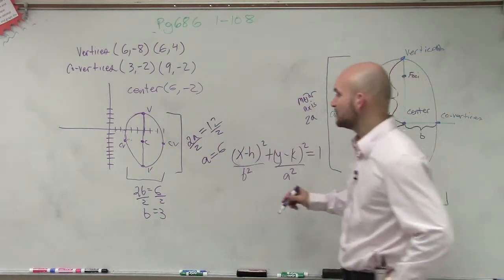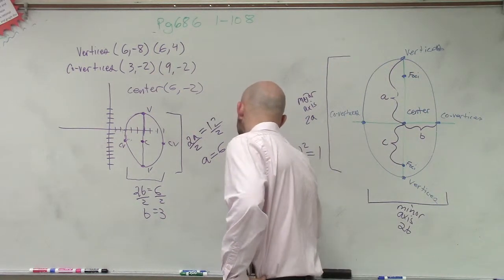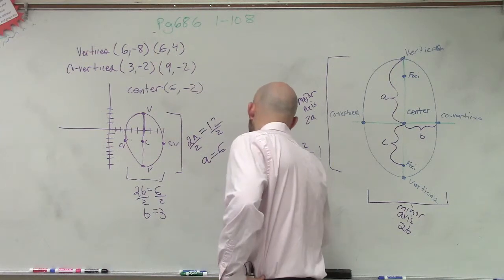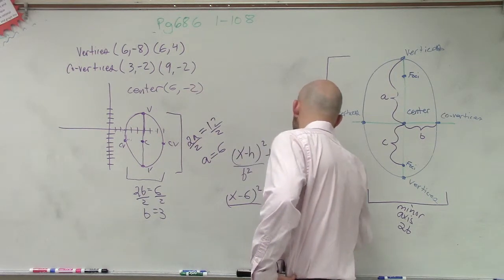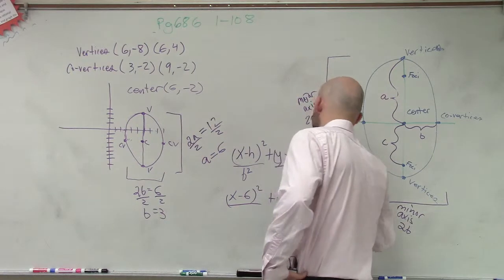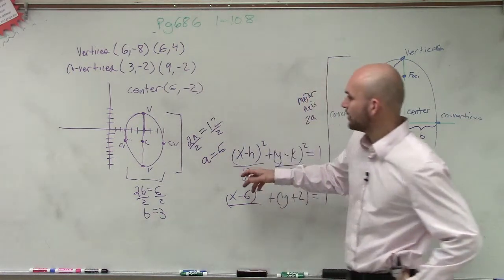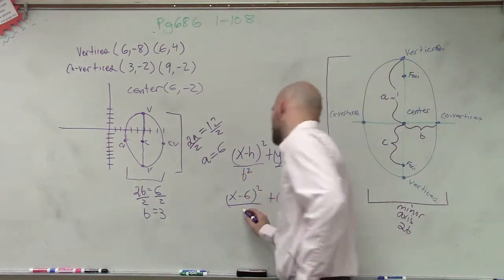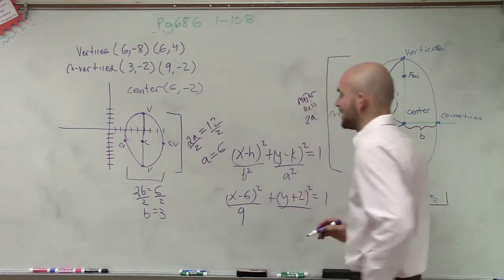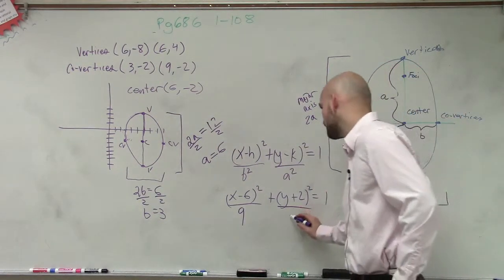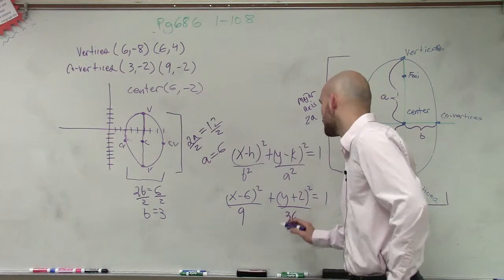So therefore, opposite of, so it's going to be (x minus 6)² plus (y plus 2)² equals 1. And then my b squared, so we know b is 3. So b² is 9. Over a squared, a is 6, so a² is going to equal 36.